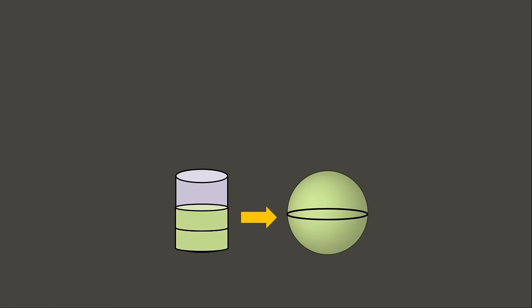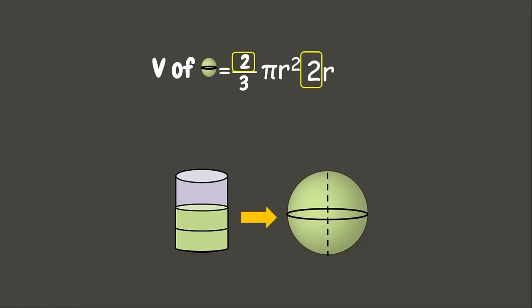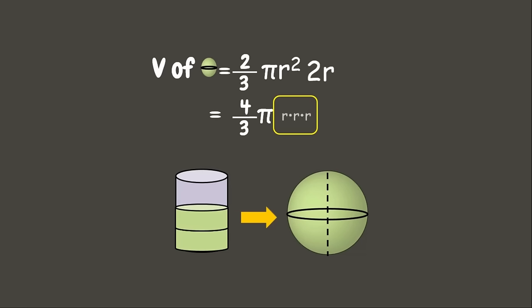We learned that one sphere can fill two-thirds of the cylinder, considering they have the same height and radius. Therefore, the volume of the sphere is two-thirds of the volume of the cylinder, giving the formula two-thirds πr²h. Here, the height of the sphere equals twice the radius, so h = 2r. Substituting and simplifying by multiplying two and two gives four-thirds. Since r² times r means r³, our final formula is four-thirds πr³.